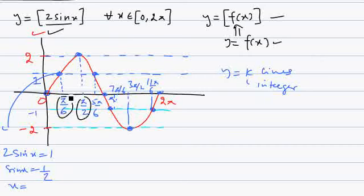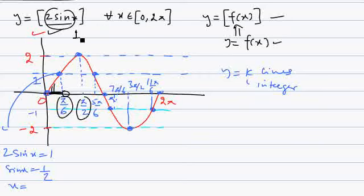Between two critical points, for example from 0 to π/6, the value of 2sin(x) varies from 0 to 1. If we apply the greatest integer function over this interval (0 to 1), all values come down to 0. However, the endpoint where 2sin(x) equals exactly 1 remains at 1, because the greatest integer of an integer is the integer itself.